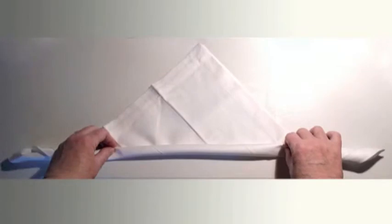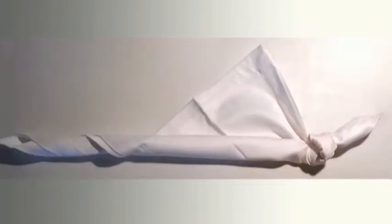Then roll the folded edge to a point about halfway between the folded side and the point of the triangle. Tie the right edge of the rolled fabric into a loose slipknot. That will form the head and one ear of the bunny.